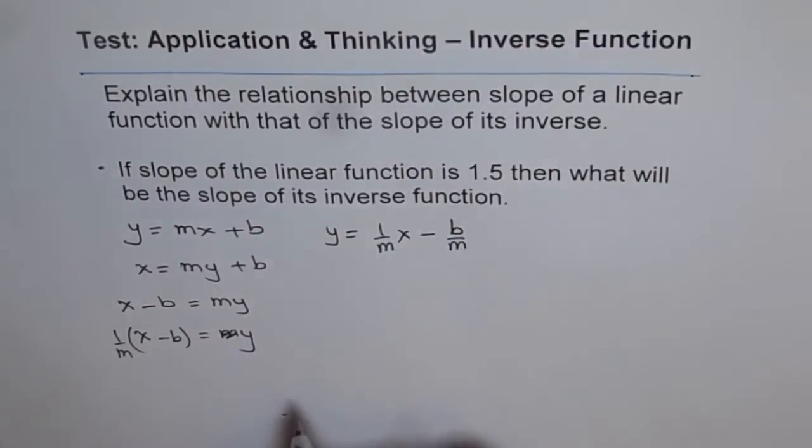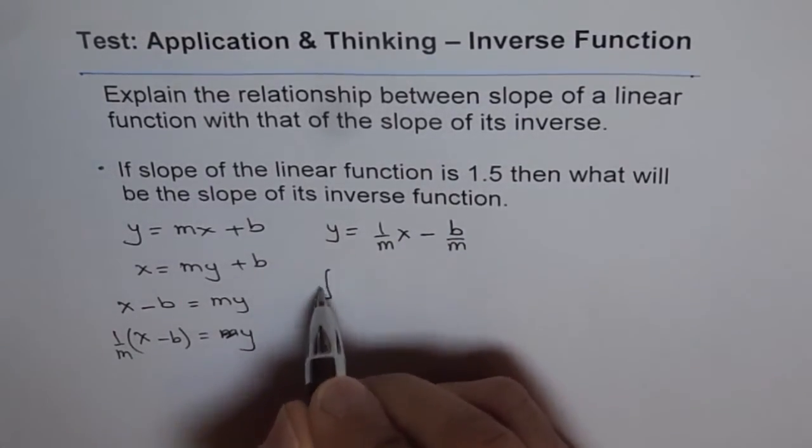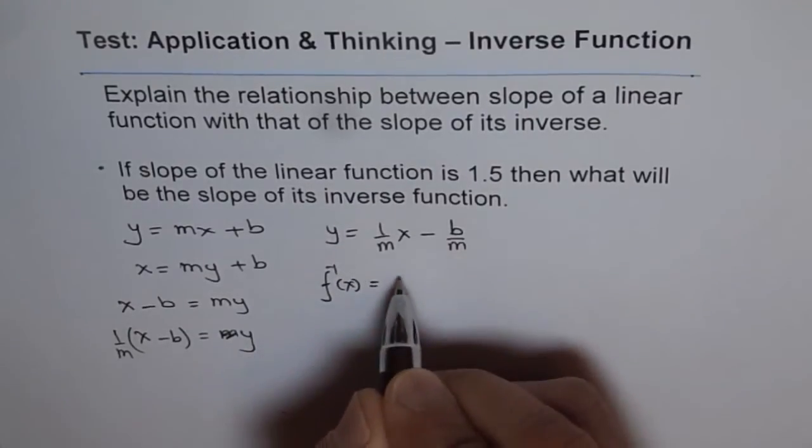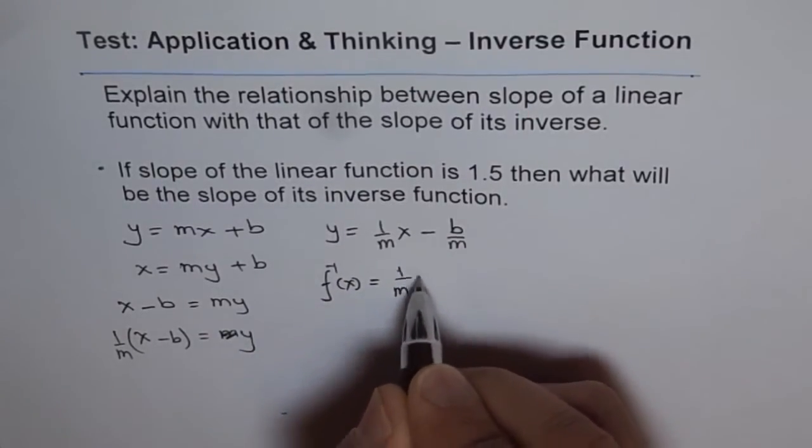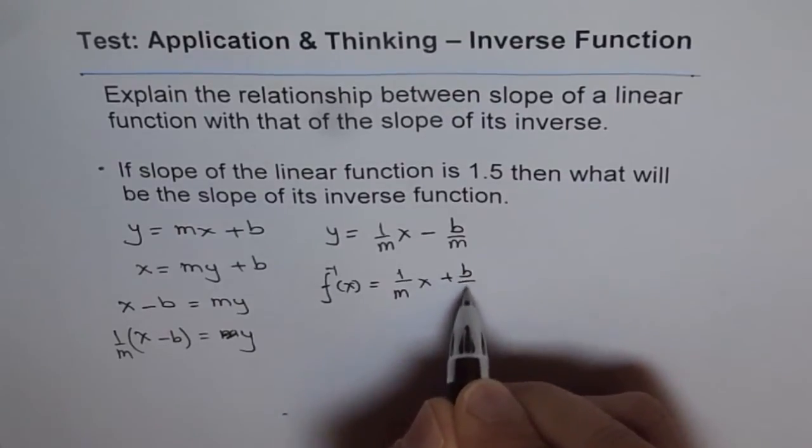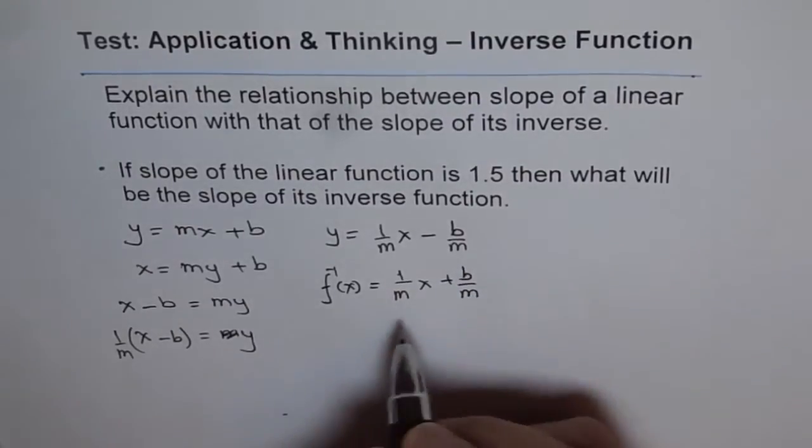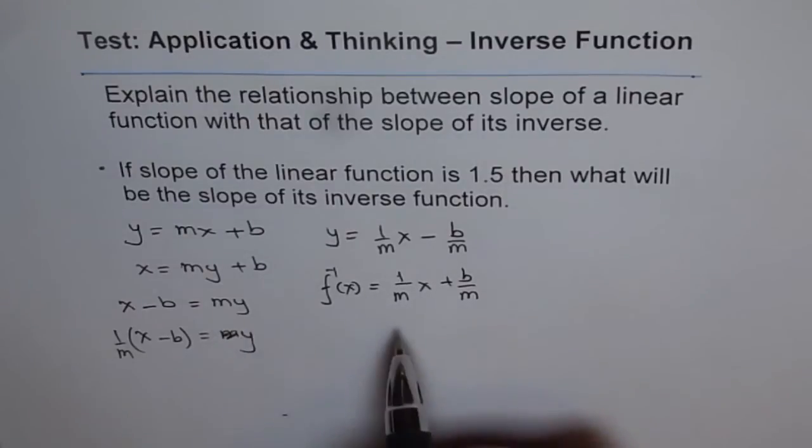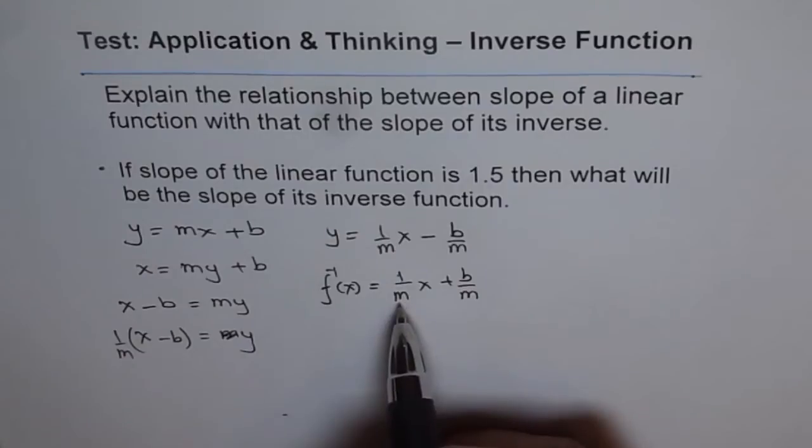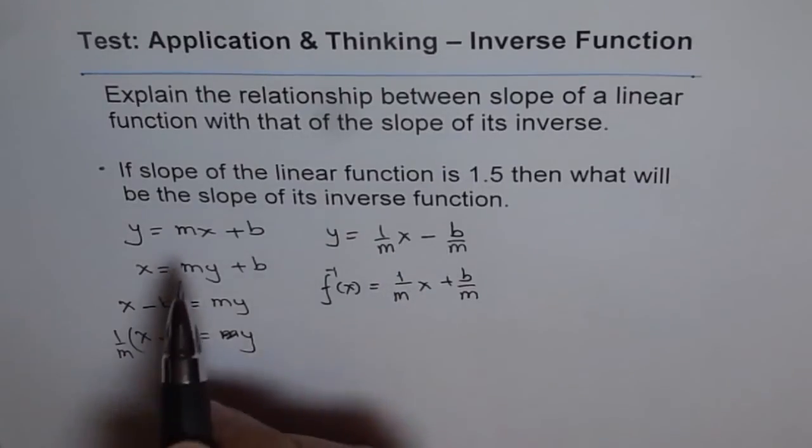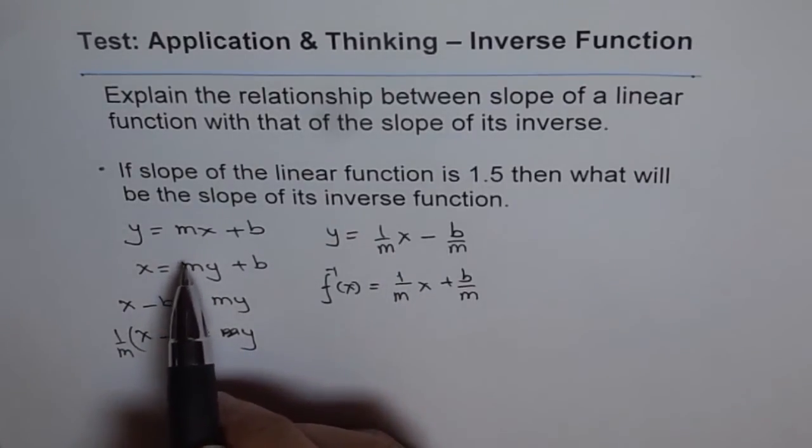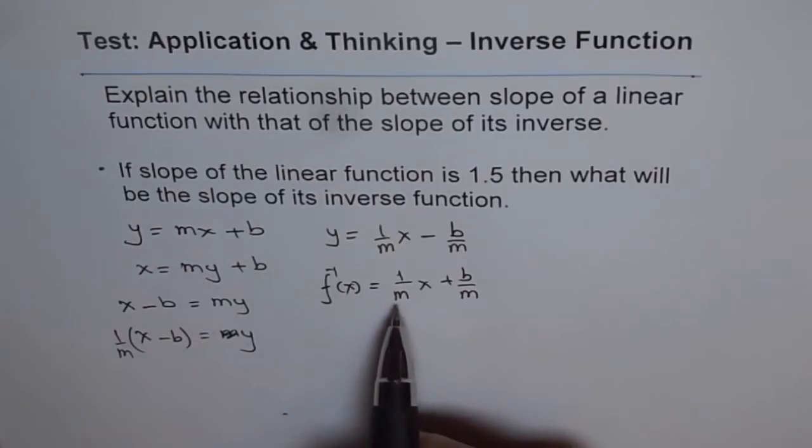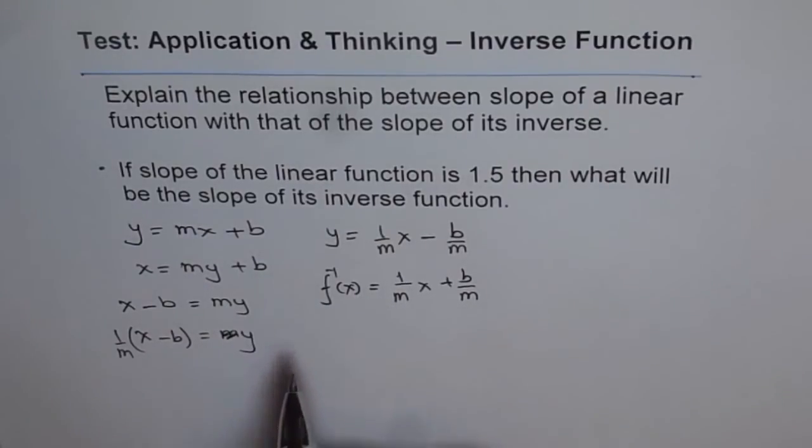Now here f inverse of x is equal to 1 over m x plus b over m. From the equation we can conclude that slope of the inverse function is actually reciprocal. So if m is the slope of the given function, then slope of inverse function will be reciprocal.